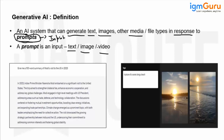So in this generative AI, it is a special type of AI category which has the capability to generate text data, image data, or other kinds of media files.